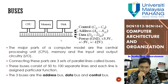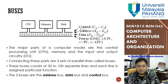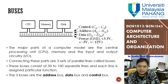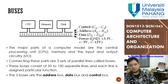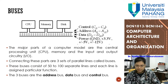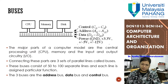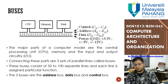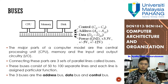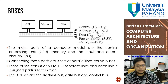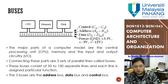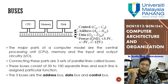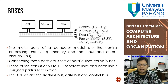Buses basically have four lines interconnecting all those components: the control line, the address line, the data line, and the power line. Power is common sense — you need it to run things — so we won't cover it much. The other three — control, address, and data — are the most important architecture within your computer. Just remember that all those components are interconnected by these three lines.